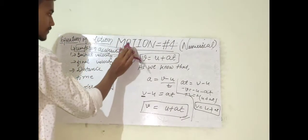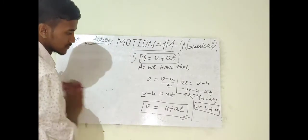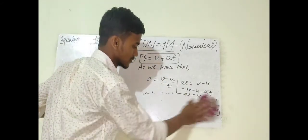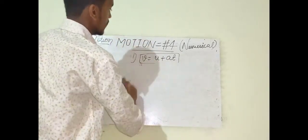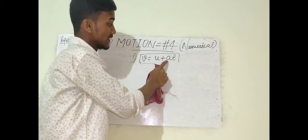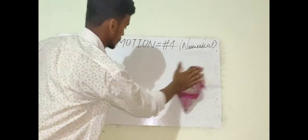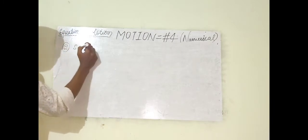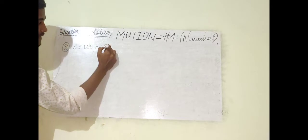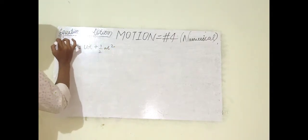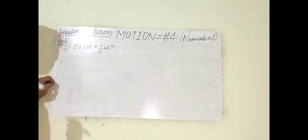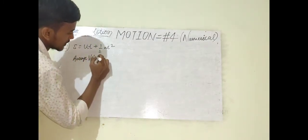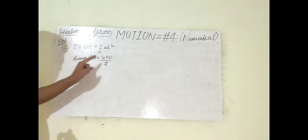I hope you've written that down. To summarize: V is final velocity, U is initial velocity, A is acceleration, and T is time taken. Now the second equation of motion is S = UT + ½AT². This is very important.